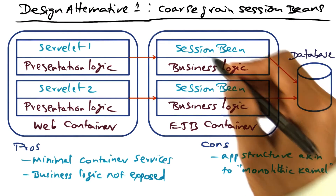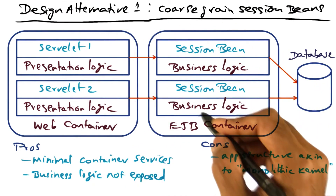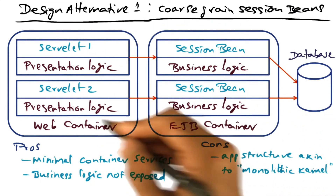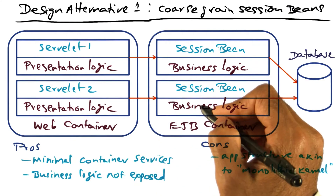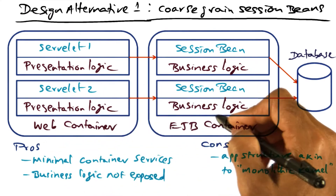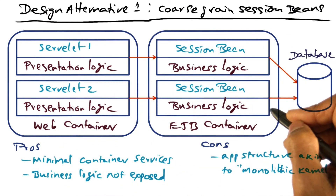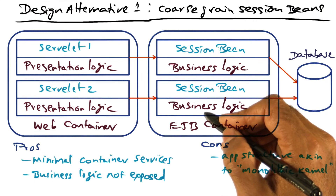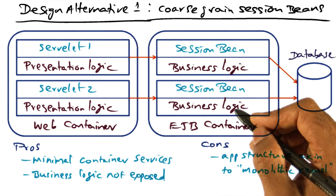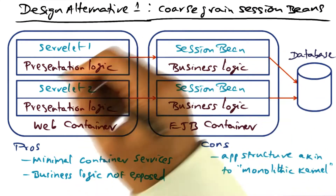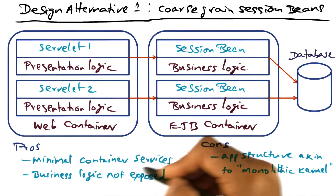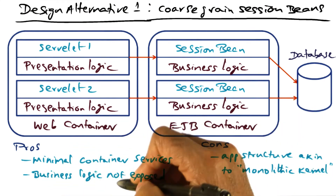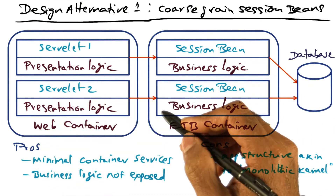Another important attribute of this structure is that the business logic is confined to the corporate network. It is not exposed to the outside world because it is in the EJB container, not the web container. Therefore, the business logic is not exposed beyond the corporate network — that's a good thing. The pros of this structure are that you need minimal container services, and the business logic is not exposed to the outside world.